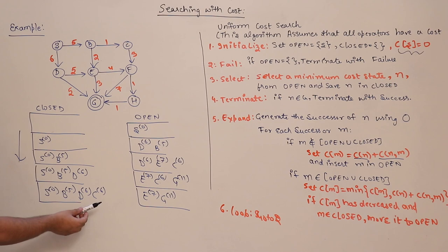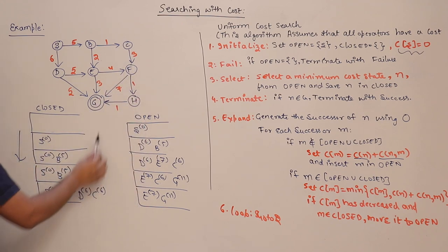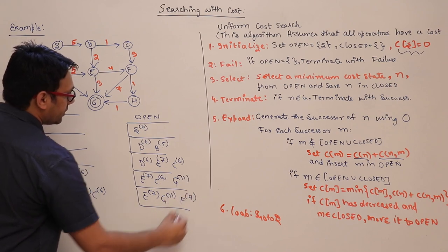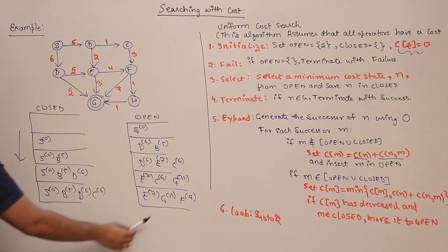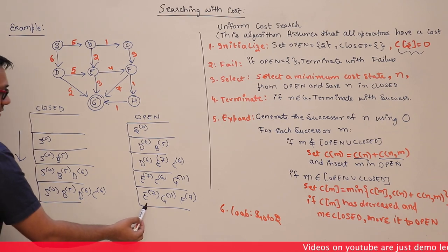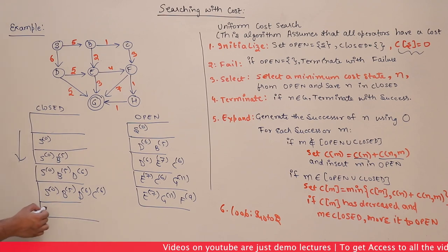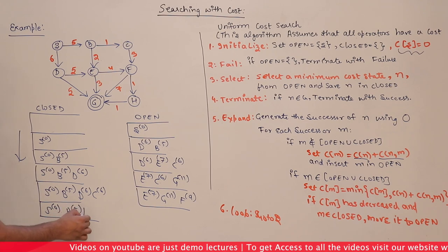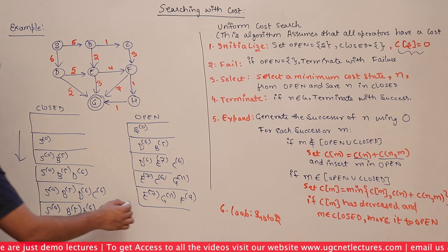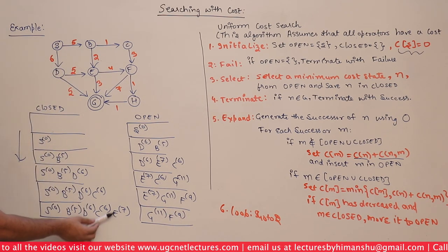From C, the only successor is F. The cost from C to F is 6 + 3 = 9, so F is inserted into open with cost 9. Open now has E with cost 7, G with cost 11, and F with cost 9. The minimum cost is E with 7, so we take E and put it into closed. Closed now contains S=0, B=5, D=6, C=6, E=7.